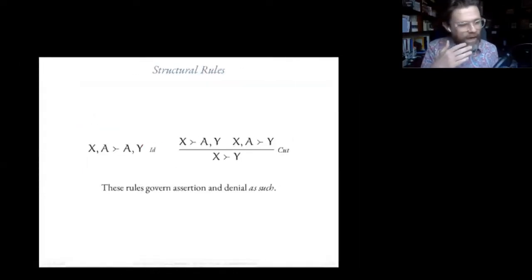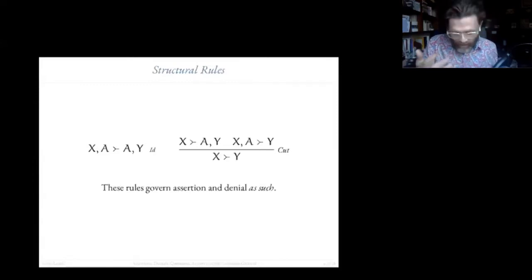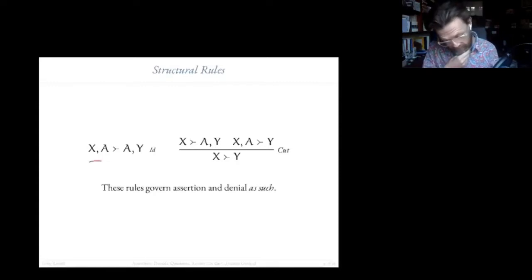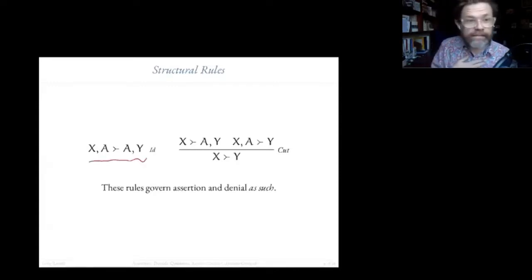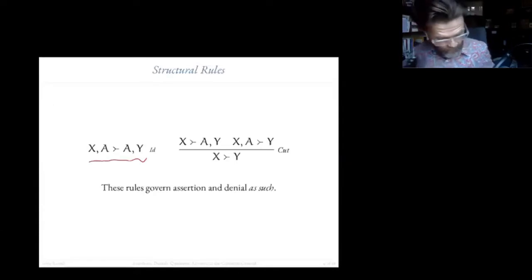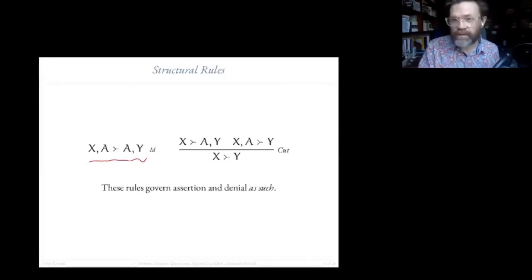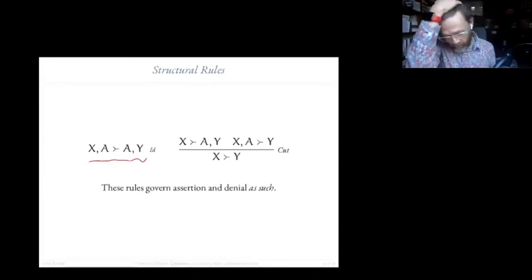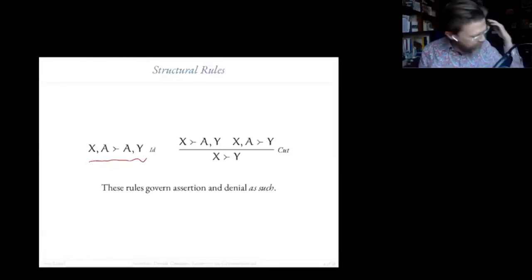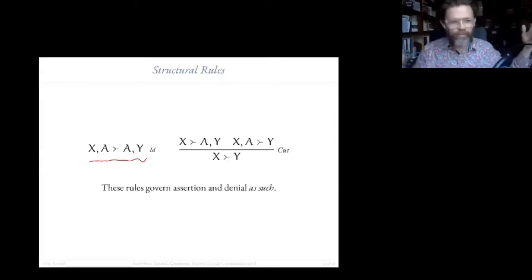The analysis I gave in 'Multiple Conclusions' was exactly symmetric in both cases: don't assert everything on the left and deny everything on the right. Don't assert a disjunction P or Q and deny both disjuncts — that would be inconsistent in just the same way. You can also get a defense of structural rules in the sequent calculus, like the rule of identity — don't assert something and deny it at the very same time. Whatever the job of denial is, it's to rule out assertion, and vice versa.